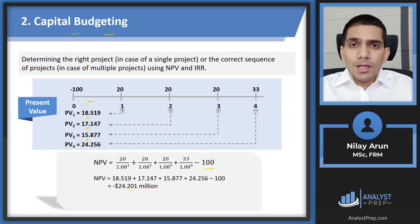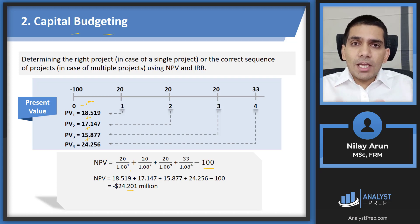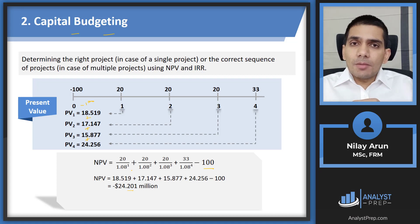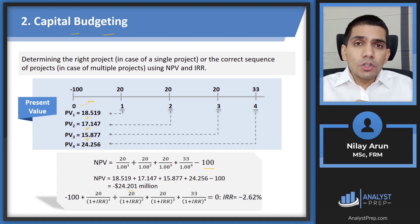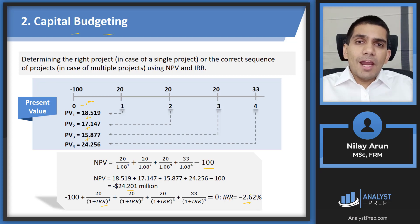Just as we calculated NPV, we can calculate the IRR as well. IRR is the rate which makes NPV equal to zero — meaning your discounted cash inflows and cash outflows are equal to each other. Since you're using a BA2 Plus calculator, you can use the IRR function. If doing it manually, you'd use trial and error, which takes time. In this case, IRR comes out to be minus 2.62%, which agrees with the NPV conclusion that we should not select this project.